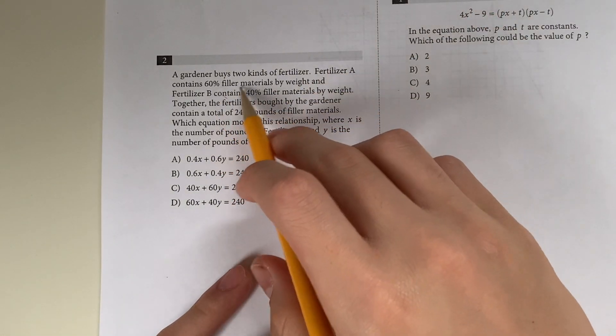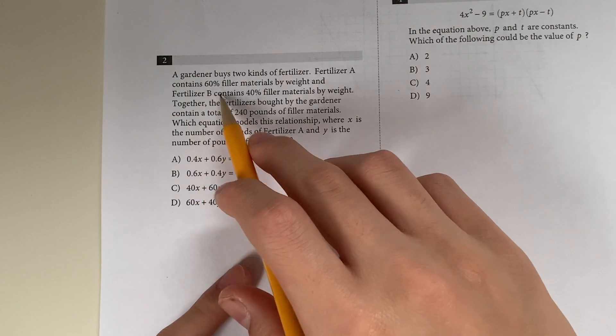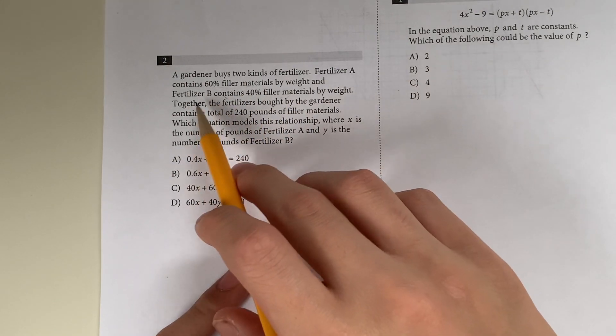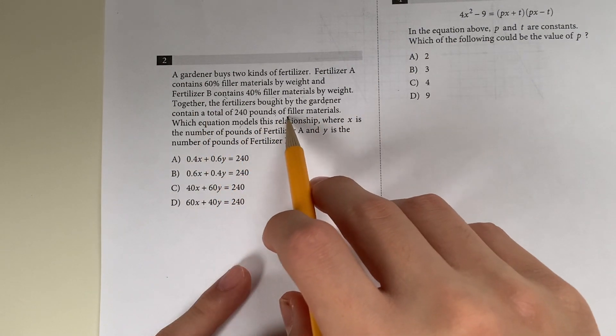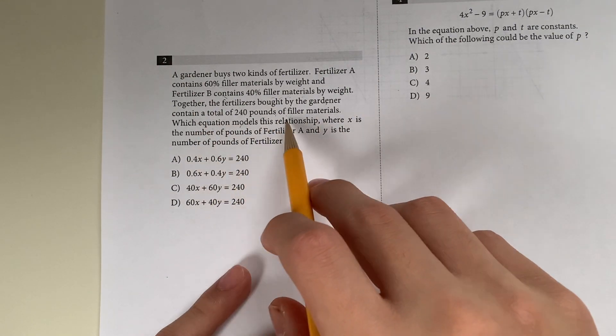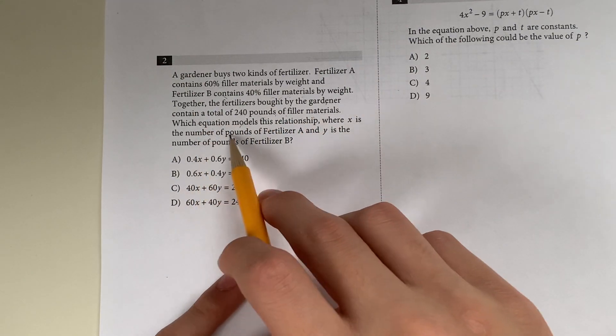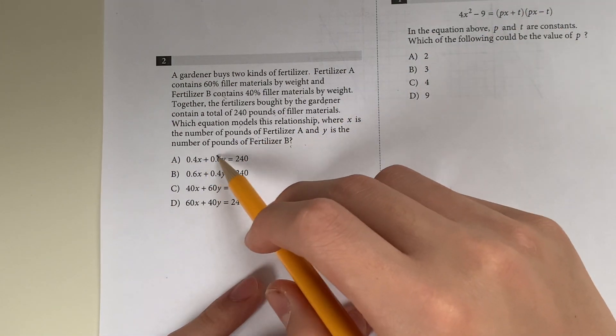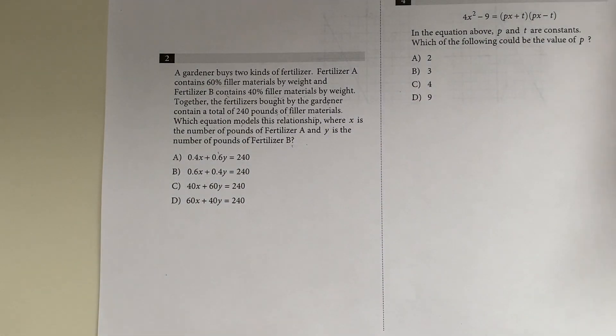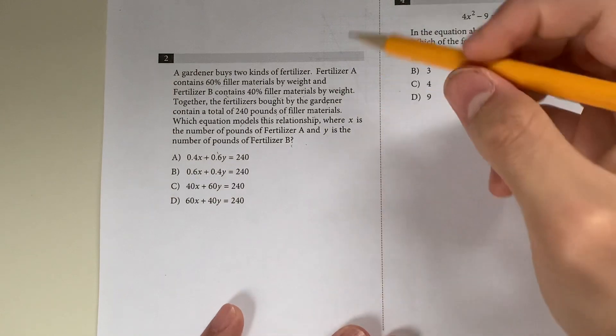Moving on, question 2. A gardener buys two kinds of fertilizer. Fertilizer A contains 60% filler material by weight, and fertilizer B contains 40% filler material by weight. Together, the fertilizers bought by the gardener contain a total of 240 pounds of filler material.